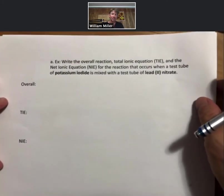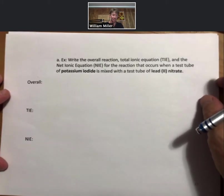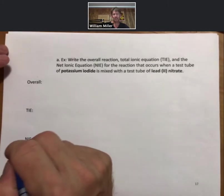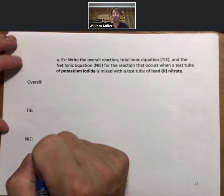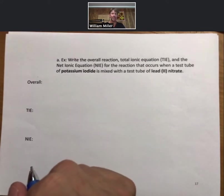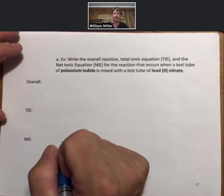So a precipitate forms. That's our experimental evidence. That precipitate is yellow in this case. And to analyze this process, we're going to go through writing the overall reaction, the total ionic equation, or the TIE, and the net ionic equation, or the NIE.